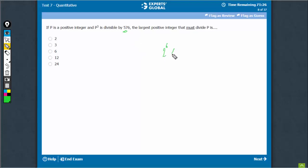So, this is 2 raised to power 6 into 3 raised to power 2. P raised to power 3 is equal to 2 raised to power 6 into 3 raised to power 2 into some integer because the question says this is divisible by 576.